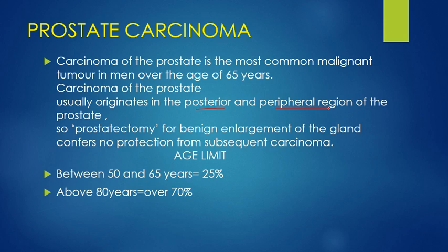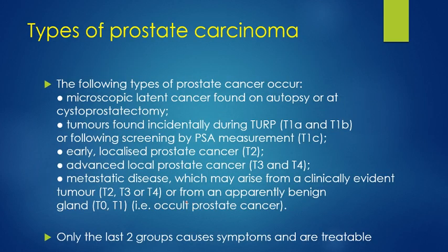Once symptoms develop, the disease is almost in its advanced stages. The age limit is between 50 and 65 years, where there is only a 25% chance of prostate CA, but over 80 years there is a 70% chance. There are various types and stages of prostate carcinoma.